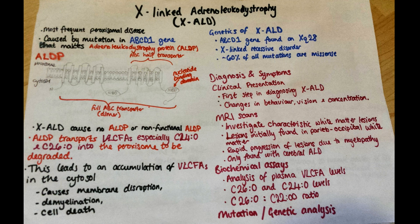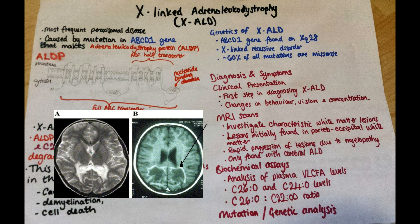Diagnosing XALD involves clinical presentation, brain imaging, and biochemical analysis of very long-chain fatty acids in the plasma. Initial symptoms include changes in behaviour and intelligence, impaired vision and hearing, seizures, and limb weakness. MRI scans are then used to investigate for characteristic lesions in the parieto-occipital white matter. However, this is only found in cerebral forms of XALD.